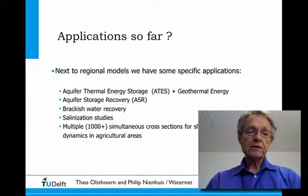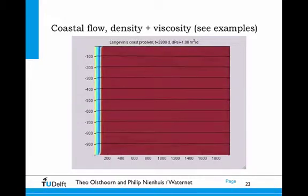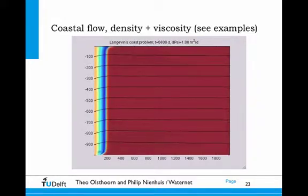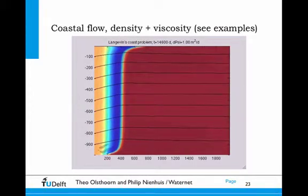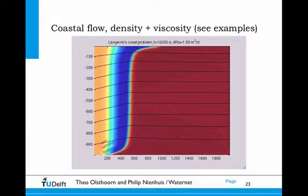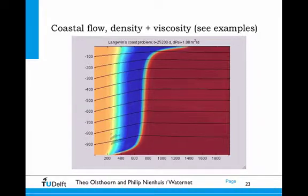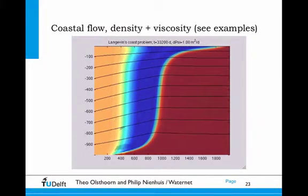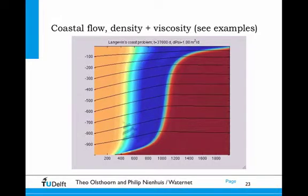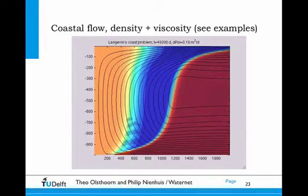Now let's look at animations of some examples. The first was given by Langevin in the manual of Seawater version 4. Warm fresh groundwater enters the cross-section from the left and flushes out cold salt water to the right. There are two interfaces: red to blue is the density interface, and blue to yellow is the temperature interface which lags behind. The black lines are streamlines — contours of the stream function. The rotation caused by density is shown when the influx from the left is stopped at 40,000 days, and you can see how the rotation is caused by the density front.